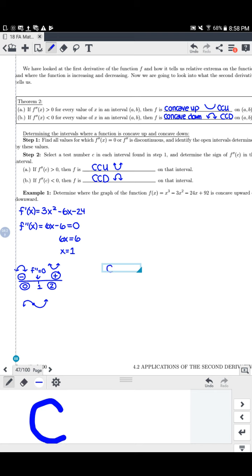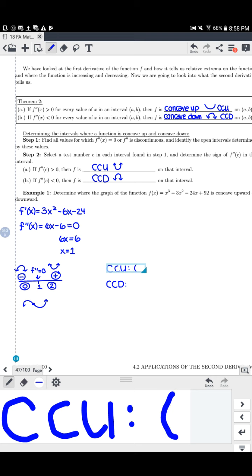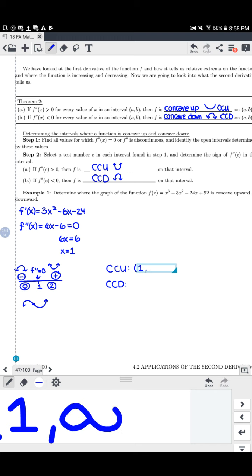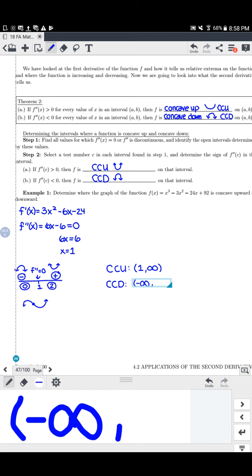All we're asked here is where are we concave up and where are we concave down. So we want to fill out those intervals. So concave up is wherever the second derivative is positive. And that was from 1 to infinity. And then where my second derivative was negative was negative infinity to 1. And we're done.